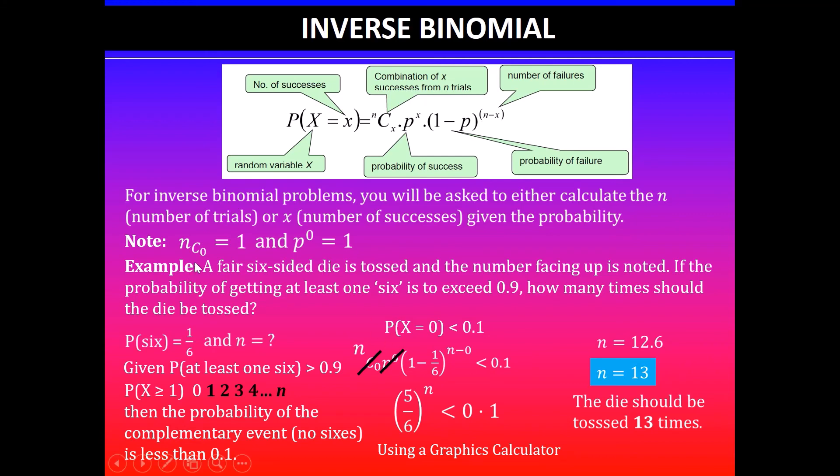What you will need to know is that anything raised to the power of 0 is 1, and also n combination 0 will also give you 1. And once you know this, then if you're given information about at least 1, at least 1 means everything but 0.